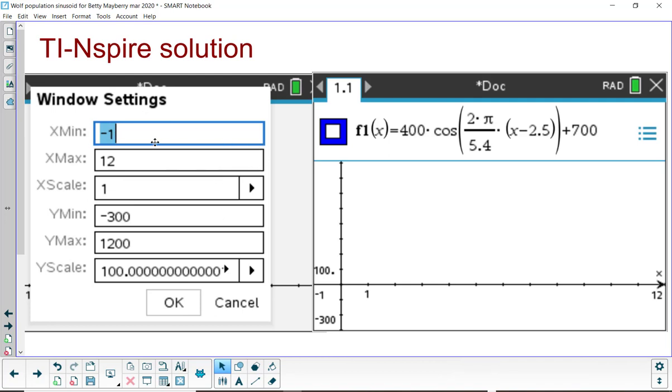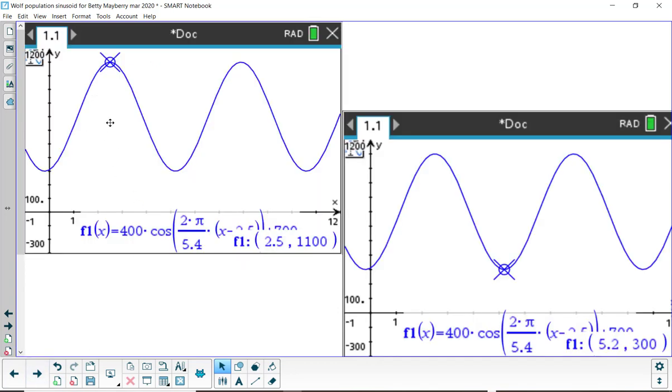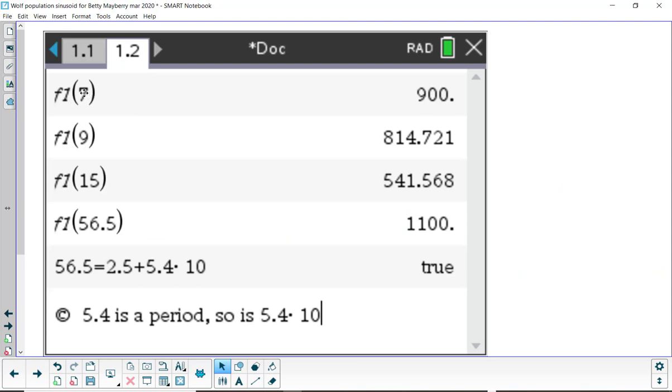For the inspire solution, here's the window, very similar to what we had before. And this is typed into f1 of x. Then, when you press graph, it will look like this. I traced to 2.5 and got 1100. I traced to 5.2 and got 300. I also, to find out the second answers, I did f1 of 7, f1 of 9, and so on. And this also explains why 56.5 gives you 1100. 54 is a period and 2.5 is where we started with a max.